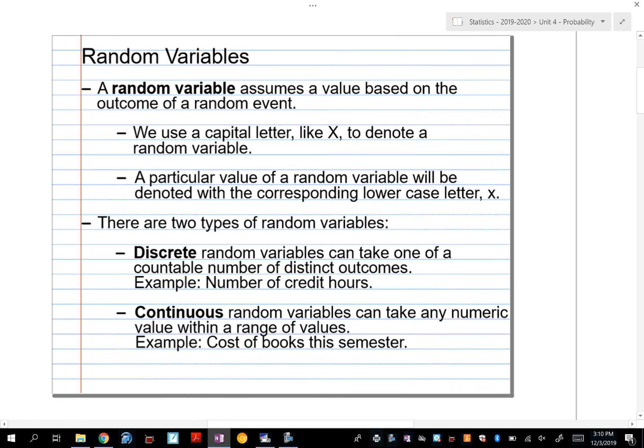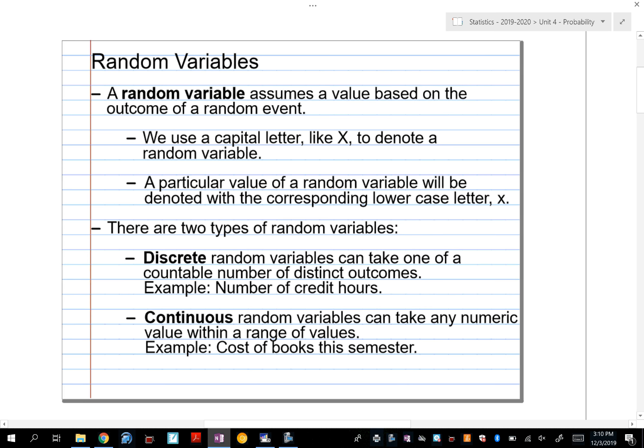Those are our two types. The examples that I've chosen for the notes are examples that you're going to see very soon in your life when you guys go to college. You're going to have the number of credit hours is an example of discrete, where it can take one of any number of countable hours. Usually the minimum to be a full-time student at universities is 12 hours, and then you'll get students that will take up to possibly in the low 20s.